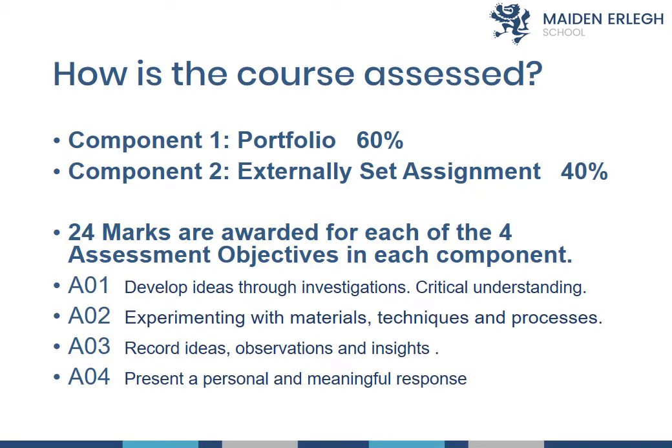So how is the course assessed? Component 1 is the portfolio, which is 60% of the student's overall grade. Component 2 is an externally set assignment in the second half of Year 11 and that makes 40% of your grade.